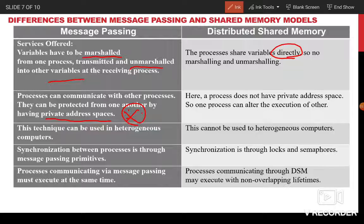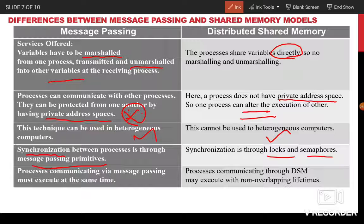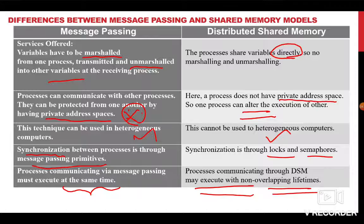In the shared memory model there is no private address space, so one process can alter the execution of another. The message passing model is applicable for heterogeneous computers, whereas the distributed shared memory model cannot be used for heterogeneous computers. Synchronization in message passing is achieved with primitives, while distributed shared memory uses locks and semaphores. Processes communicating via message passing must execute at the same time, whereas in distributed shared memory they may execute in non-overlapping lifespans.